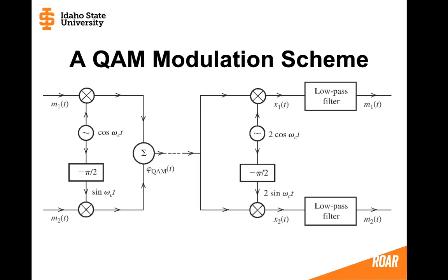The quadrature amplitude modulation scheme might look something like this: message 1 is modulated by a cosine wave, and that cosine wave is shifted by pi/2 to create a sine wave, which modulates message 2. The modulated message 1 and modulated message 2 are then combined to form the quadrature amplitude modulated signal, which is transmitted across the channel.